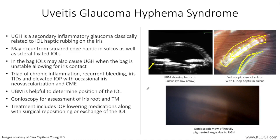UGH syndrome may also be associated with poorly-sized anterior chamber IOLs and iris or scleral-fixated IOLs when the haptics come in direct contact with the posterior surface of the iris, iris root, and vascular tissues proximate to the sulcus.